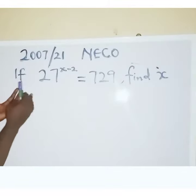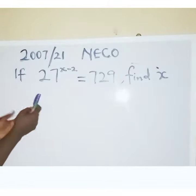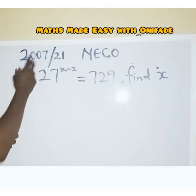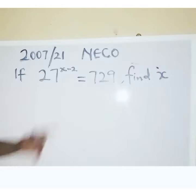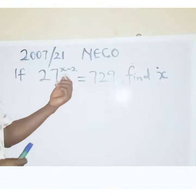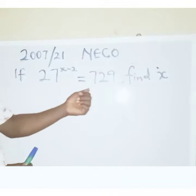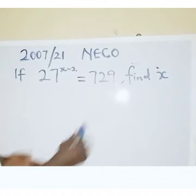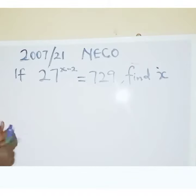We are asked to solve this exponential equation. This question is coming from NECO 2007/21, number 21. Now, if 27 raised to power x minus 2 equals 729, find x. So how do we go about this?